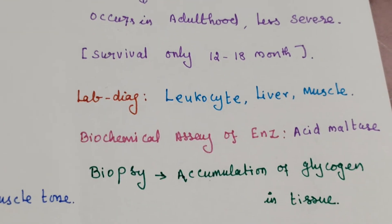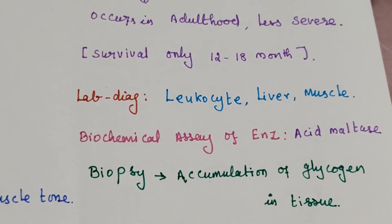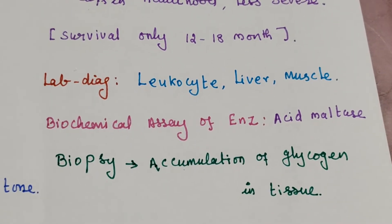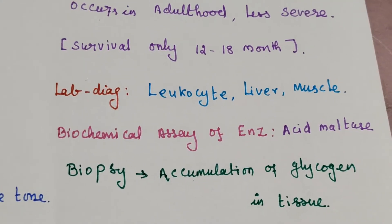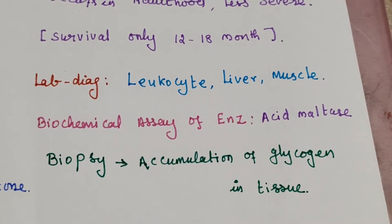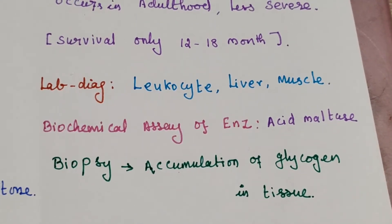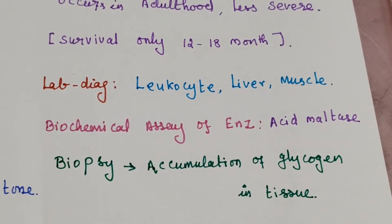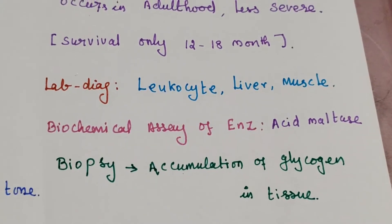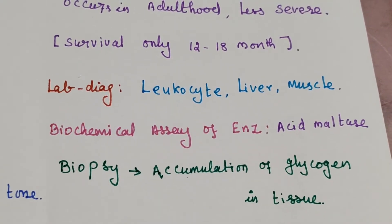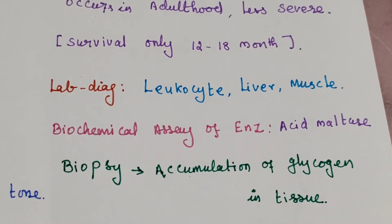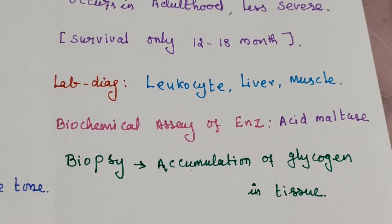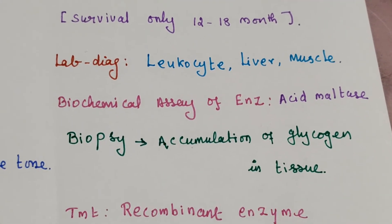For laboratory diagnosis of Pompe's disease, samples are collected from leukocytes, liver, and muscles. A biochemical assay of the enzyme acid maltase is performed. Biopsy shows accumulation of glycogen in the tissue.